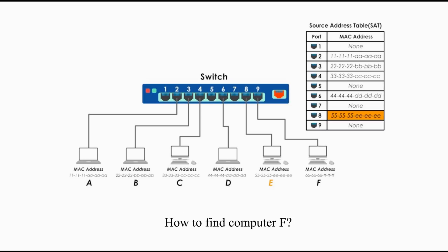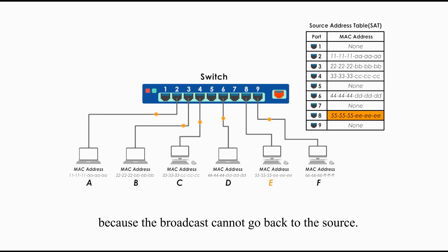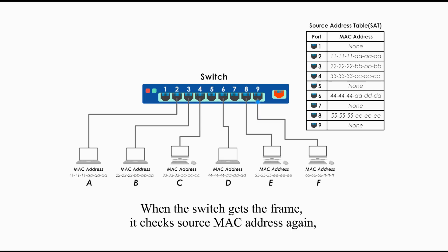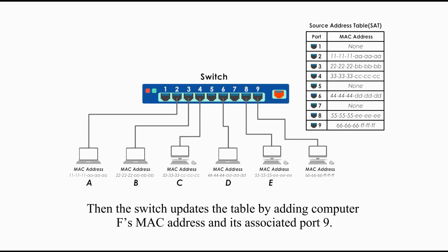How to find computer F? The best method is broadcasting. The switch broadcasts the frame to all other ports except port 8, because the broadcast cannot go back to the source. When computer F gets the broadcast message, it replies normally. When the switch gets the frame, it checks the source MAC address again and does not see it in the SAT table. Then the switch updates the table by adding computer F's MAC address and its associated port 9.